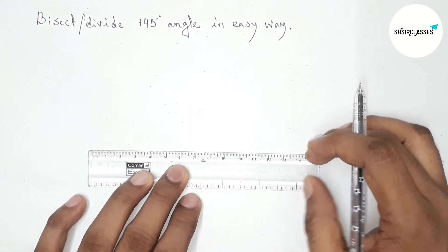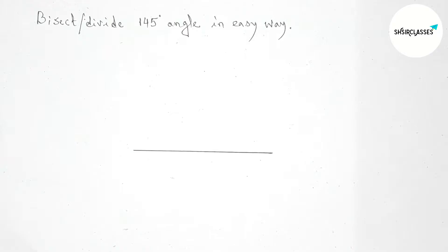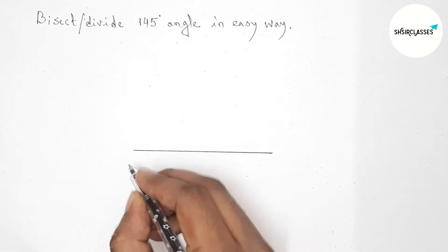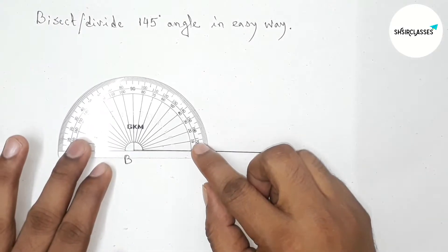First of all, let us draw here a line segment of any length, taking here point B and here C. Next, drawing 145 degree angle on point B with the help of protractor.